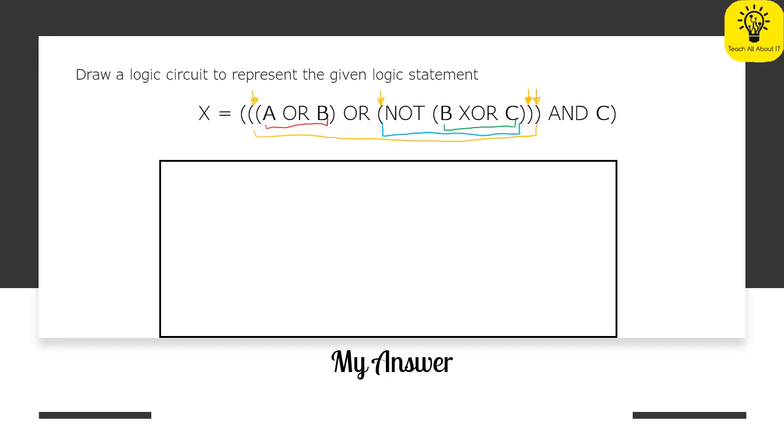Now that means the AND C is sort of on its own. Okay all of this and C. Now this is called scope and what I'm going to do is I'm actually going to draw out my logic gate and my logic diagram using those colours so you can see how they relate.